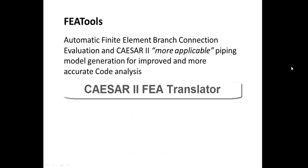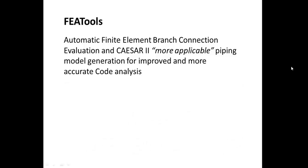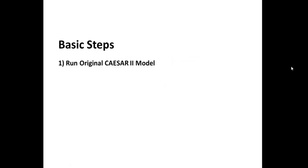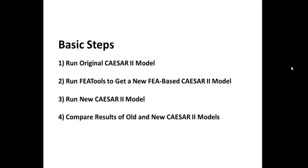Let's go through a step-by-step procedure and see exactly how the translator modules in FEA Tools work. The basic steps in the improved analysis procedure are: first, we run the original CSER II model; next, we run the translator to get an improved CSER II model based on FEA and test results. The translator writes this new CSER II model automatically. Third, we run the new CSER II model. And fourth, we compare the results of the new model to the results from the original CSER II model.